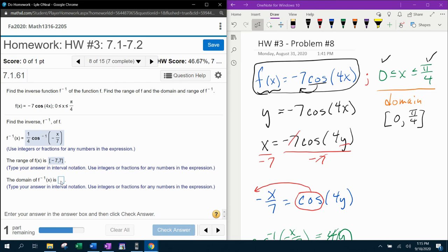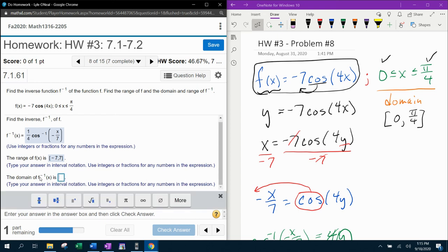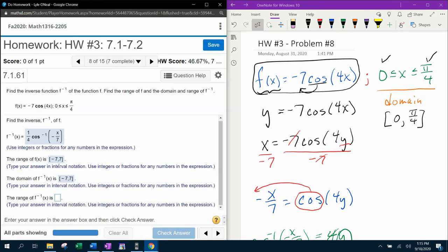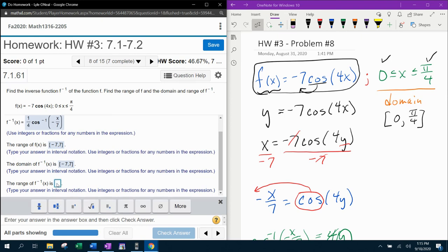Now, for the domain of the inverse, we know that that is the range of the original. The domain of the inverse function is always the range of the original function. So we're going to copy and paste that again. And we know that the range of the inverse is the domain of the original. And we can see over here the domain of the original function in interval notation should be 0 to pi over 4.